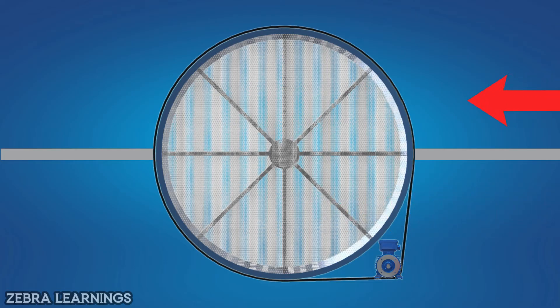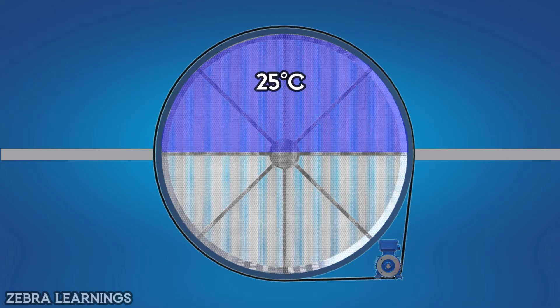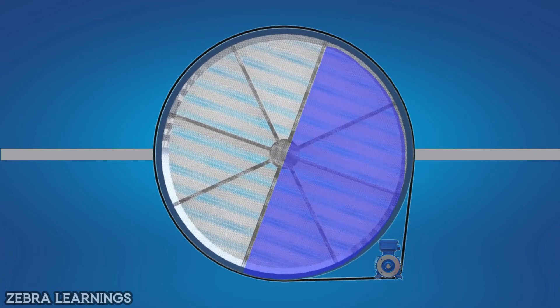As air at the top passes through the thermal wheel at 25 degrees Celsius, the thermal wheel cools down to 25 degrees Celsius. As the thermal wheel rotates, the upper part comes down.